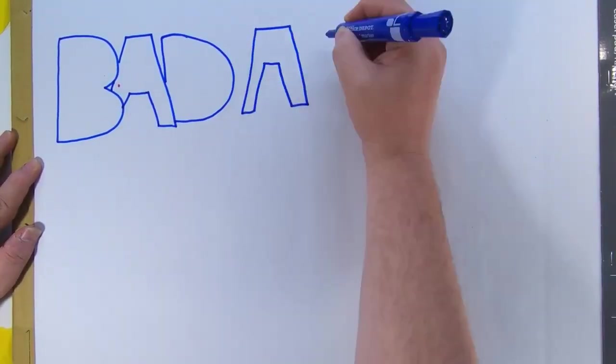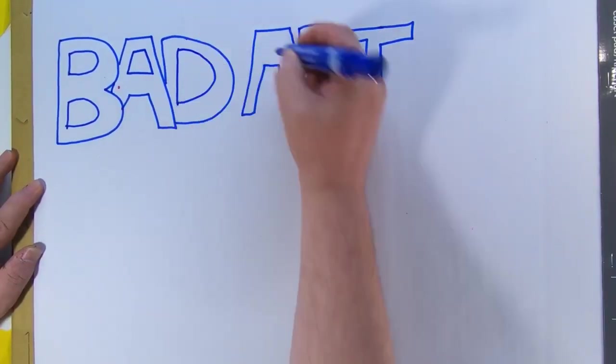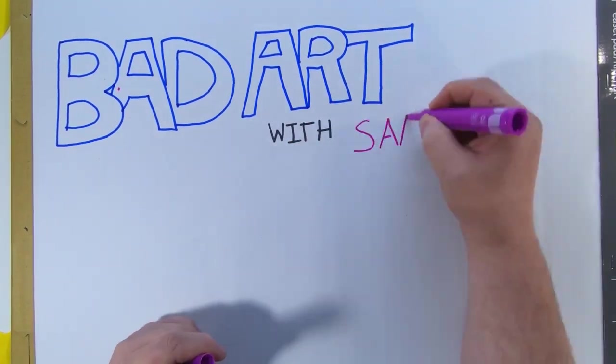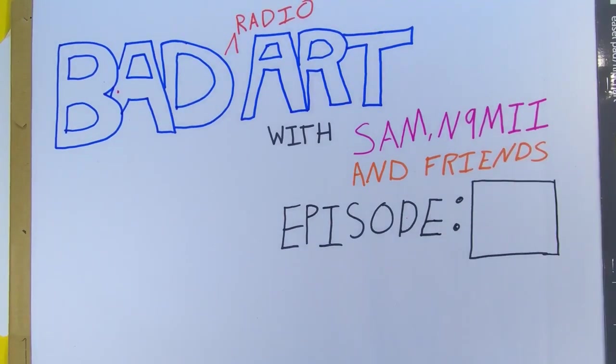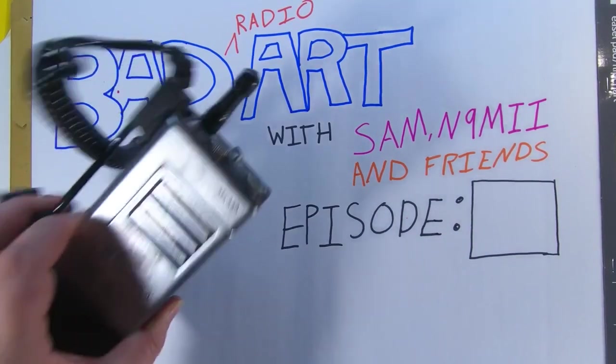Welcome back to Bad Art with Sam, a badly drawn cavalcade of fairly dense material. Please remember that you can go back as many times as you want to get all the info into your head. Now that we've covered waves and some basic electrical theory, let's get into electronics.